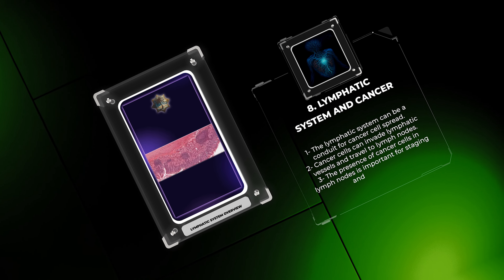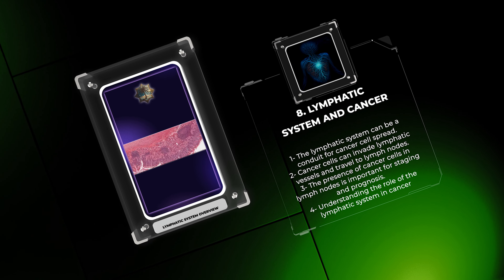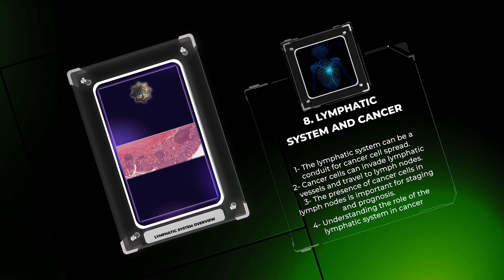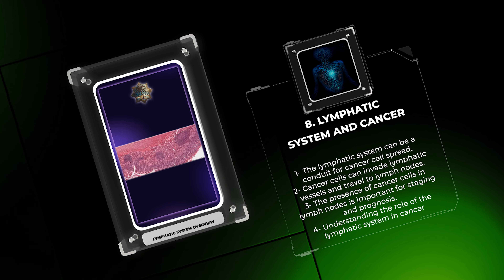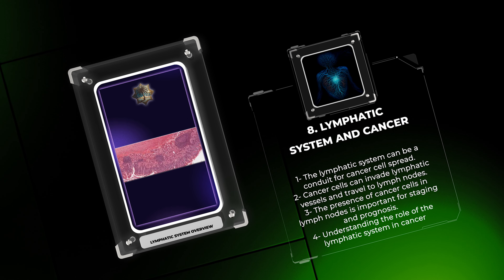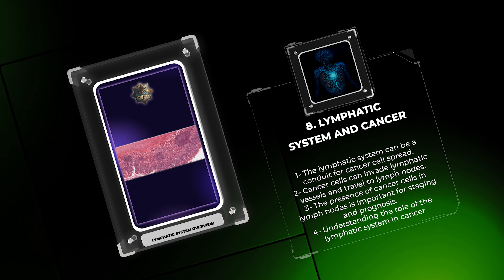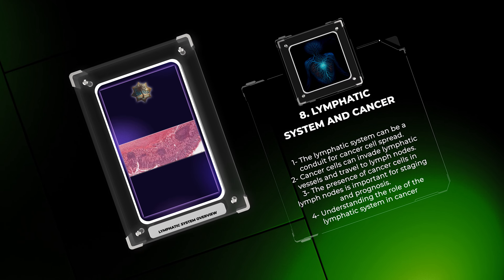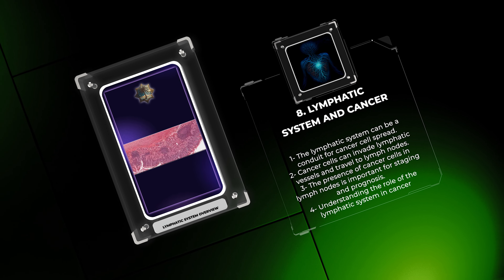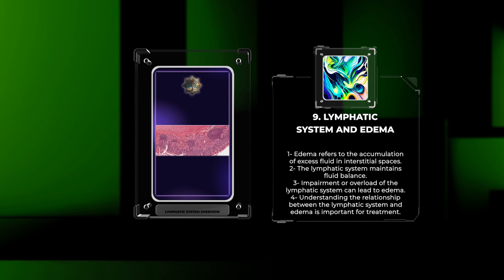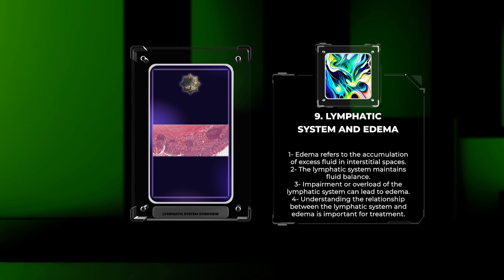The lymphatic system can be a conduit for the spread of cancer cells. Cancer cells can invade lymphatic vessels and travel to regional lymph nodes, leading to tumor metastasis. The presence of cancer cells within lymph nodes is an important staging factor in cancer diagnosis and prognosis. Understanding the role of the lymphatic system in cancer dissemination is critical in developing targeted therapies and improving patient outcomes.